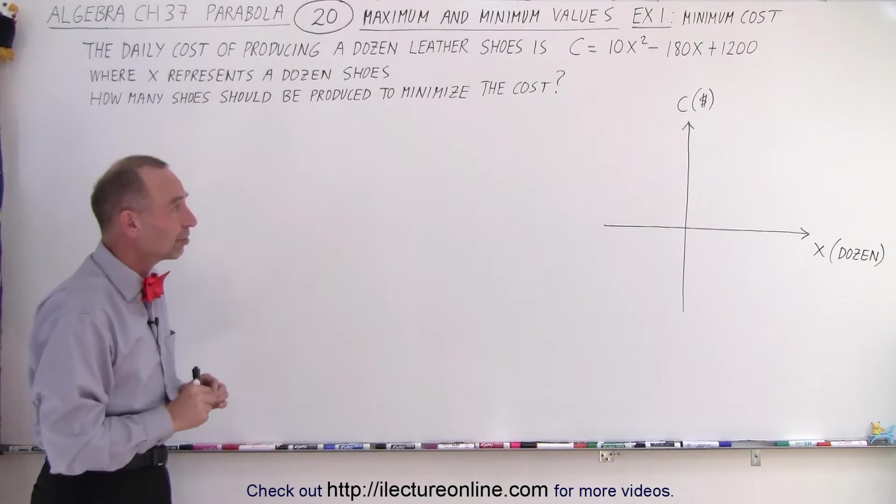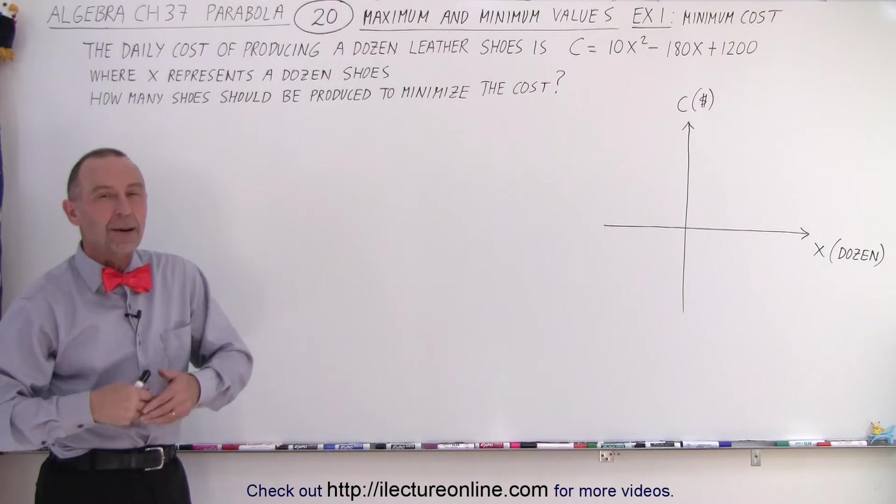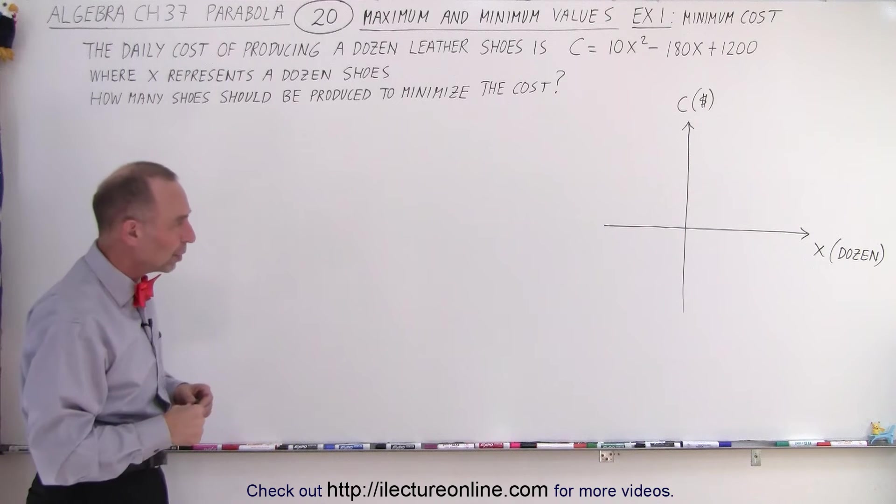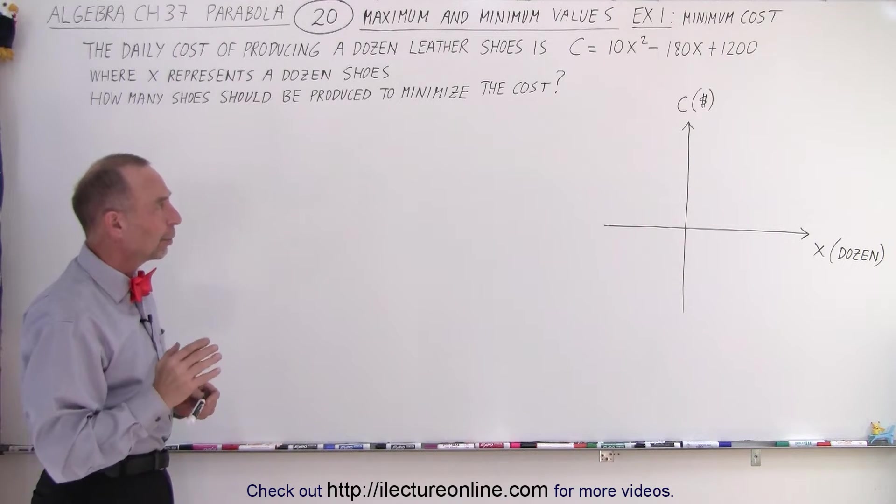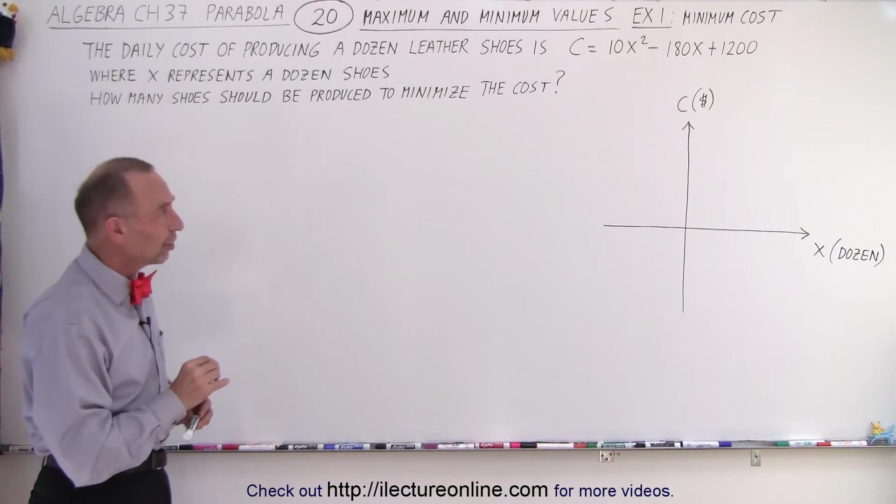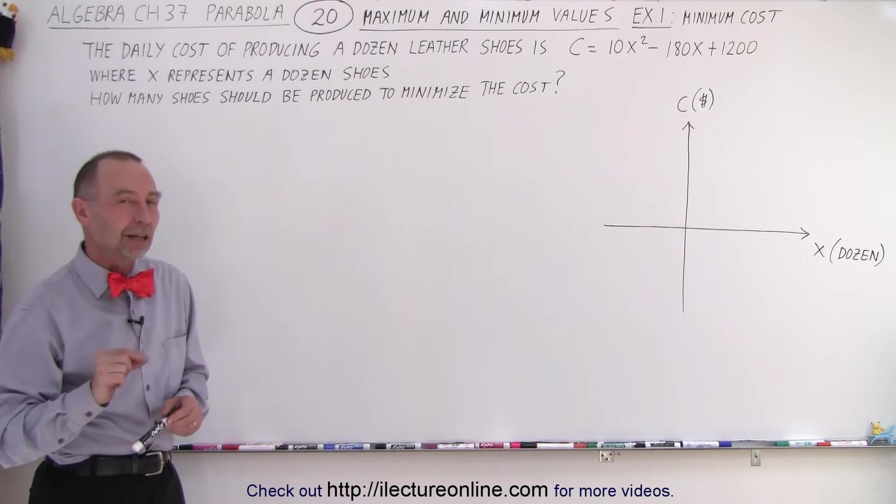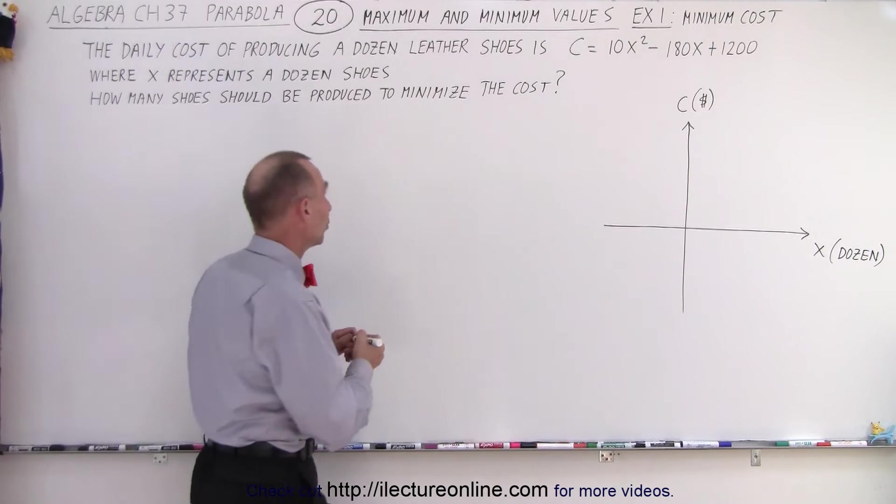We want to find the minimum cost on the daily basis. How many dozens of shoes should we produce? What we're going to do is we're going to graph this function, and we're going to first find the vertex. To do that, we need to find the x-coordinate of the vertex.